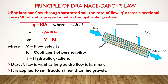The principle behind drainage is Darcy's Law. Darcy's Law states that the velocity of flow through a saturated soil medium is directly proportional to the hydraulic gradient. Hydraulic gradient is the slope of the land, represented by Δh/L, where Δh is the change in height and L is the horizontal distance. So V is directly proportional to i, giving the equation V = ki, where k is the hydraulic conductivity of the soil.